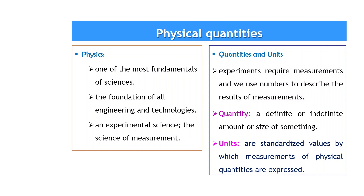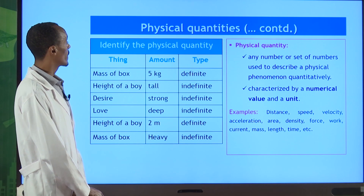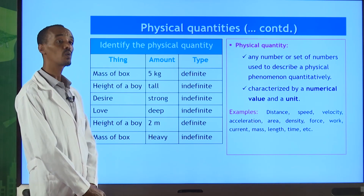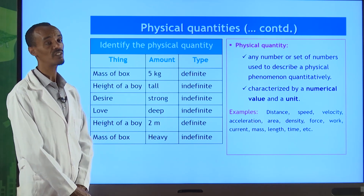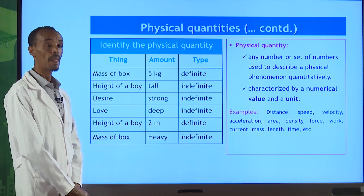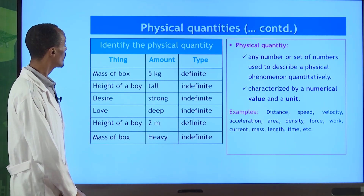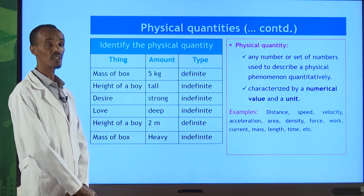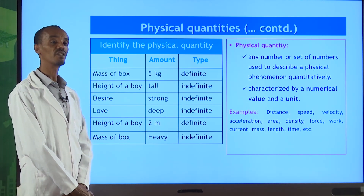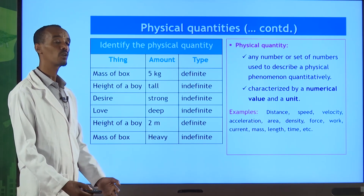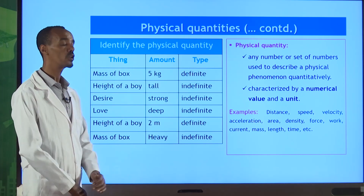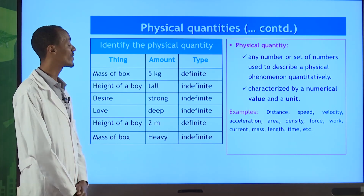If we have no units, then physically numbers alone will not give us a meaningful message. A physical quantity can be definite or indefinite. For example, if the mass of a box is five kilograms exactly, the type of quantity is definite — we have the numerical value five, we have the unit to express it, so the quantity is definite.